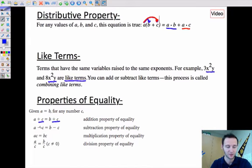Same with subtraction property of equality. You can subtract c from the left side as long as you subtract it from the right side. Multiplication property of equality. If you multiply the left side by c, you also have to multiply the right side by c. So a times c equals b times c.